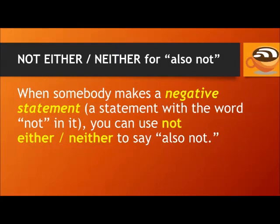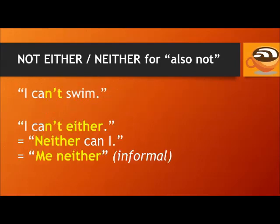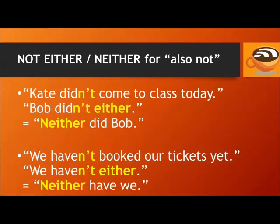When somebody makes a negative statement — a statement with the word not in it — you can use not either or neither to say also not. The structure of the reply is a little different depending on which one you use. If someone says I can't swim, you can say I can't either, or neither can I. Or you can say me neither — that's an informal way to say it. Kate didn't come to class today. Bob didn't either, or neither did Bob. We haven't bought our tickets yet. We haven't either, or neither have we. Both of these options are correct and they mean the same thing.